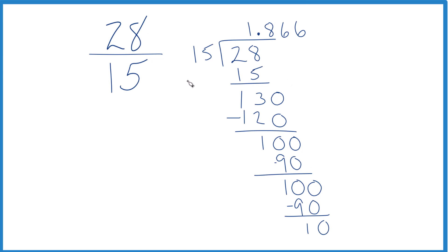So in answer to our question, 28 fifteenths, the fraction, as a decimal is 1.86. The 6 keeps repeating. We'll just put a bar over it. Suppose you could round it to 1.87 if your teacher's okay with that.